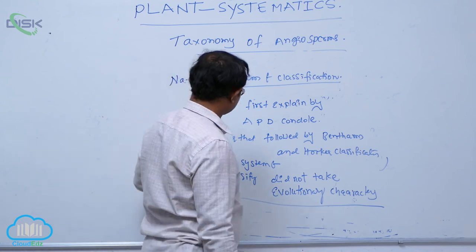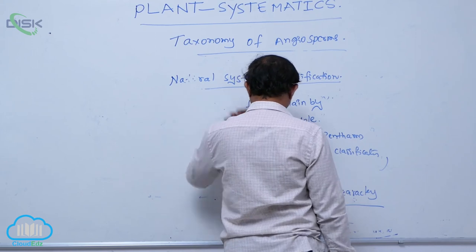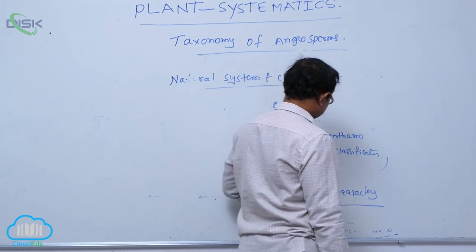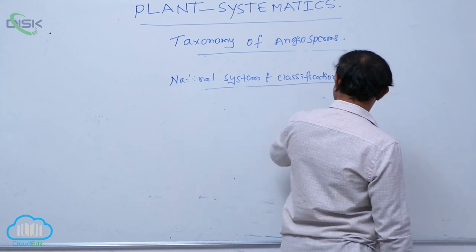So in the natural system of classification, Bentham and Hooker classification is the popular. According to that Bentham and Hooker classification, it is a natural system of classification.